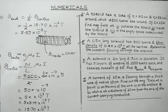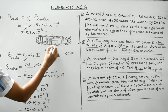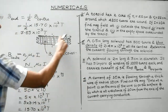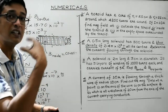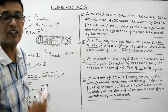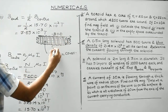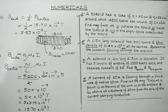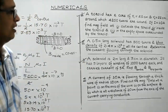Just outside the current-carrying solenoid — although not asked in the question — the magnetic field in those two outer regions would be zero. We are done with question number three. Let's proceed to question number four.